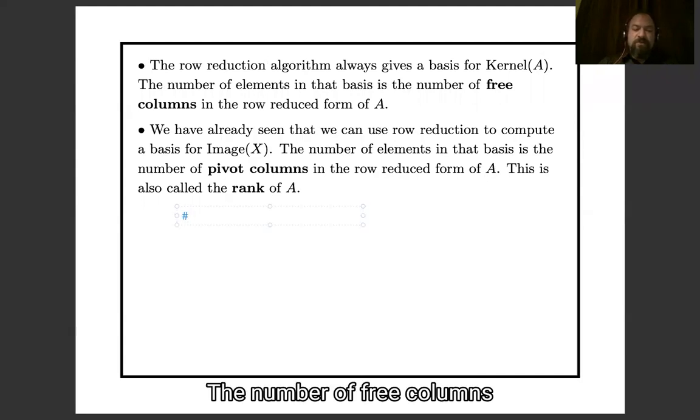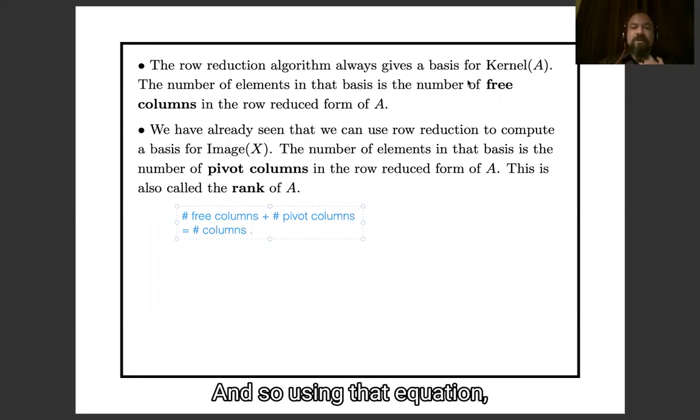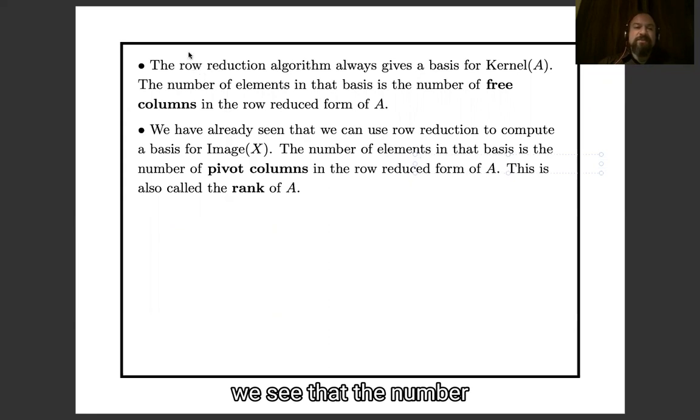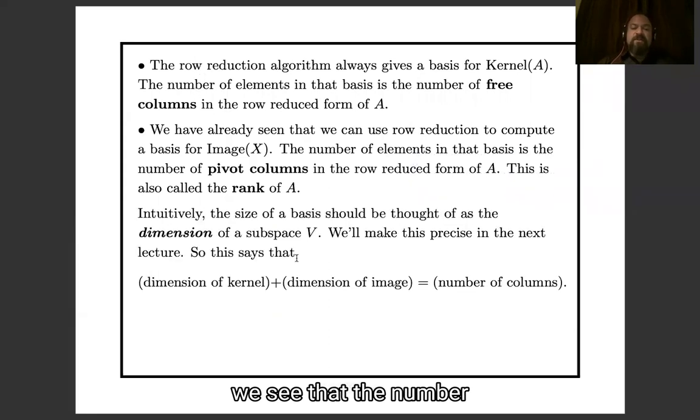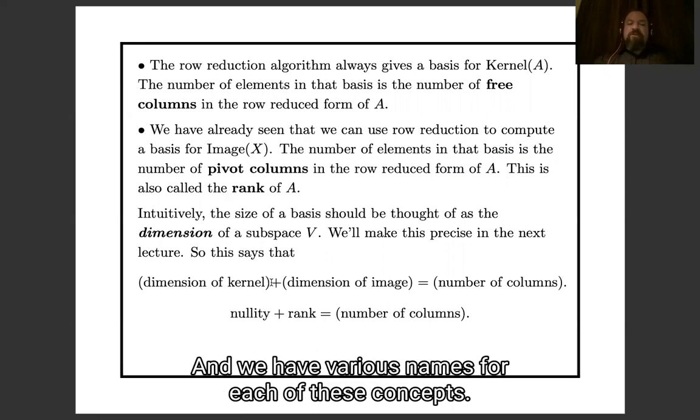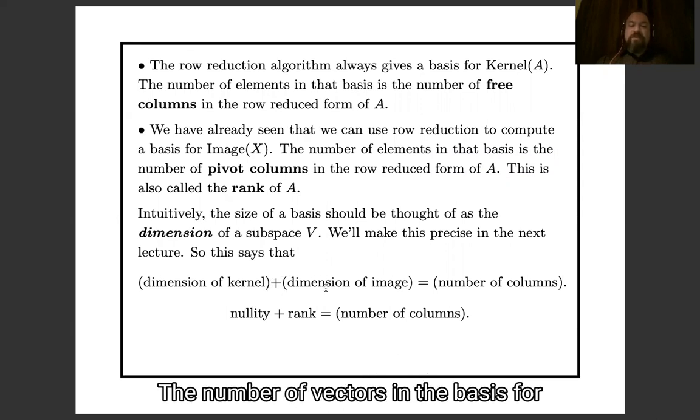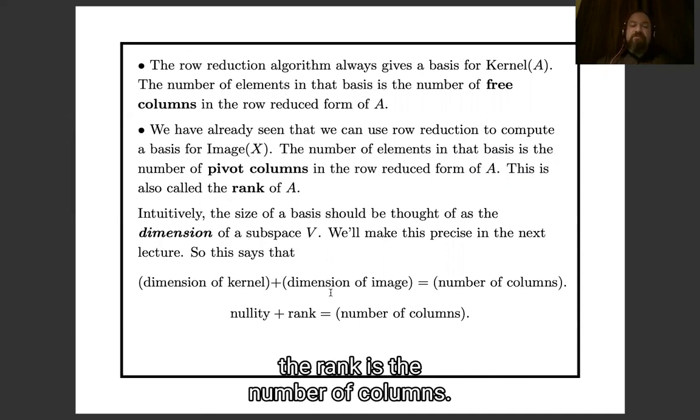And so using that equation we see that the number of vectors in the basis of the kernel plus the number of vectors in the basis of the image is going to be the number of columns. And we have various names for each of these concepts. The number of vectors in the basis for the kernel is called the nullity. And we see that the nullity plus the rank is the number of columns. This is called the rank nullity theorem.